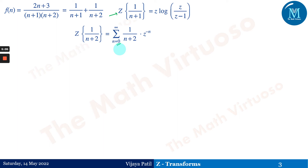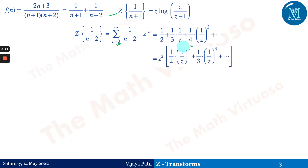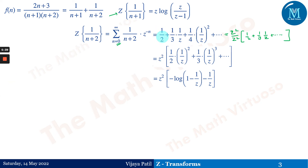In the denominator we have n+2, which is never negative, so we start the summation from n=0. Expanding for n=0, 1, 2, ..., we get a series. Taking z² outside the series gives: z²·[(1/2)·(1/z)² + (1/3)·(1/z)³ + ...].